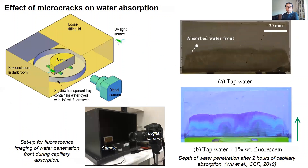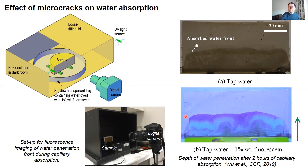We carried out a series of experiments to try to isolate the microcracks and study their significance on mass transport. One of the first experiments was to use a simple setup to visualize the absorption of water through the microcracks. We exposed one side of the sample to water containing a special dye, and then used fluorescence imaging to track the ingress of water in real time. Despite the simplicity of the setup, we were surprised to obtain images very similar in characteristics to neutron imaging — so we have accidentally created a cheap, poor man's version of neutron imaging.